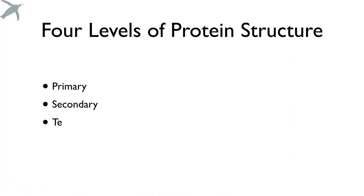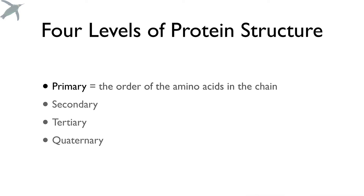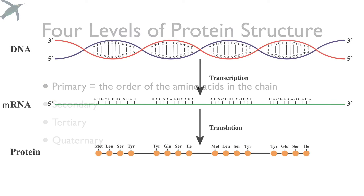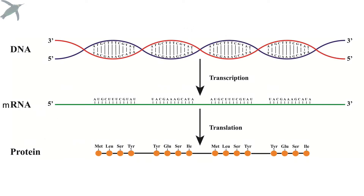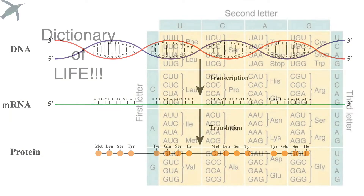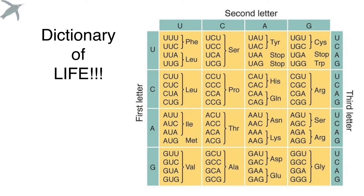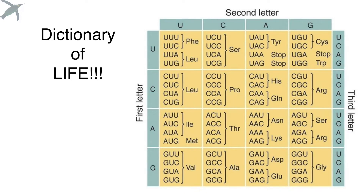That's the secret. The first level — primary — is the order of the amino acids in the chain. What determines that is the DNA sequence. DNA to messenger RNA, we've got transcription, and then on the ribosomes we've got translation of the messenger RNA into the final protein. This is how messenger RNA encodes all 20 amino acids — the dictionary of life.